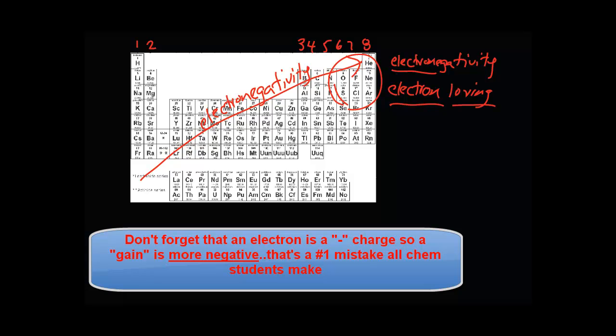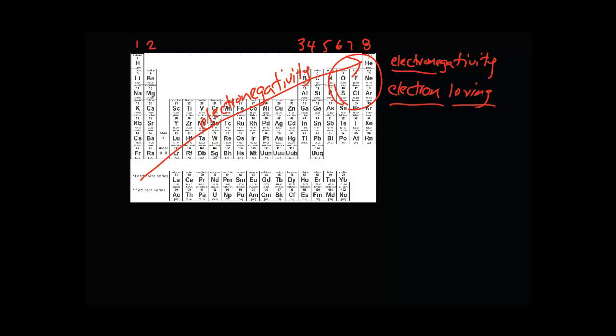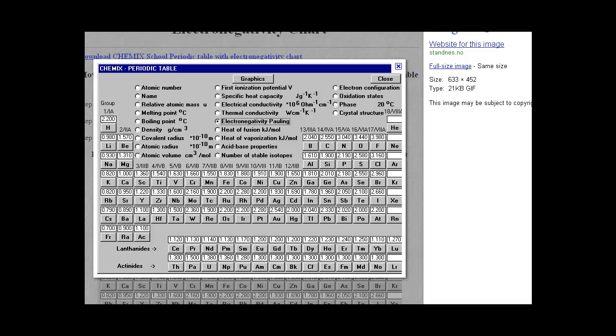Another thing that increases from bottom left to top right is ionization energy. By definition, ionization energy is the ability to pluck off one electron. It requires more energy for the more electron loving elements to lose an electron. The most electronegative element, around 4 on the scale, is fluorine. Electronegativity charts are great—get one.